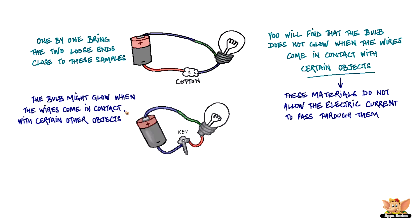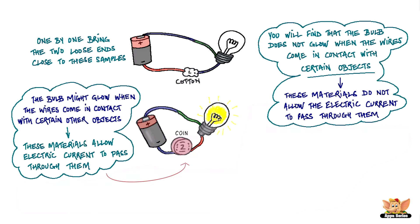On the other hand, the bulb might glow when the wires come in contact with certain other objects. These materials allow electric current to pass through them.